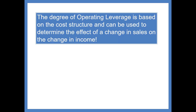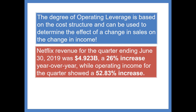In summary, the degree of operating leverage is based on cost structure and can be used to determine the effect of a change in sales on the change in income. For example, for the quarter ending June 30th, 2019, Netflix showed revenues increased 26% while operating income for the quarter showed a 52.83% increase. Now you know this is because of the degree of operating leverage — they have a degree of operating leverage of about 2. Get some practice. I'll see you in class.